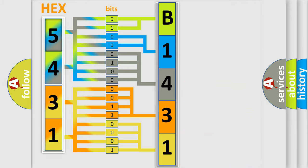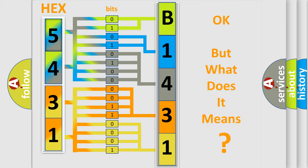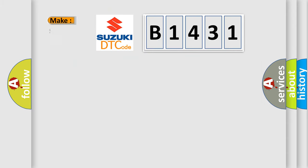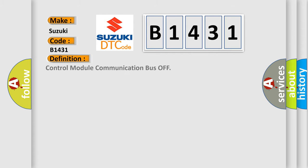We now know in what way the diagnostic tool translates the received information into a more comprehensible format. The number itself does not make sense to us if we cannot assign information about what it actually expresses. So, what does the diagnostic trouble code B1431 interpret specifically for Suzuki car manufacturers? The basic definition is: control module communication bus off.